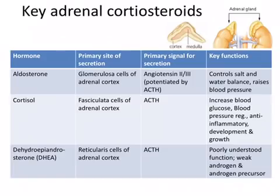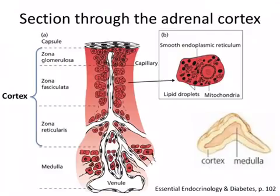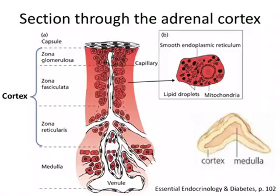This table summarizes the key adrenal steroid hormones. They're all made in the cortex, so they're called corticosteroids. The different steroid hormones are made in different zones within the adrenal cortex, which you can see on your metabolic map. In the zona glomerulosa, aldosterone is primarily made; in the fasciculata zone, cortisol is primarily made; and DHEA is made primarily in the reticularis zone.